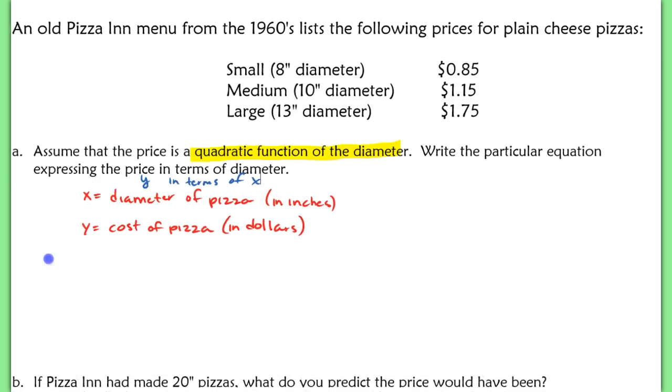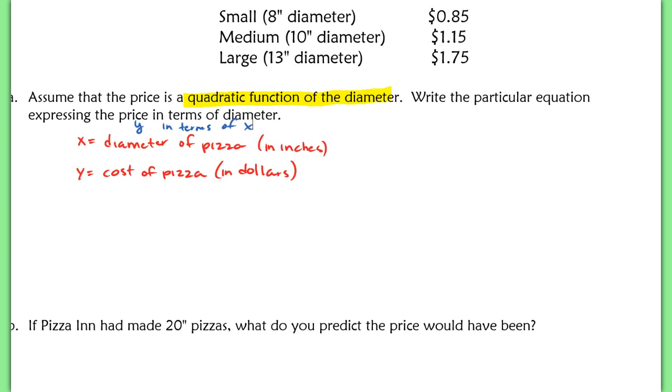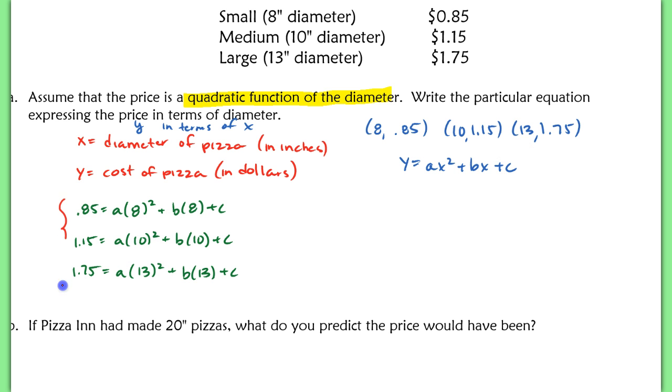This is just an application of taking three coordinate pairs. We have (8, 0.85), (10, 1.15), and (13, 1.75). These are three coordinate pairs, and we're going to write a quadratic model using y equals ax squared plus bx plus c. We have three distinct equations using each one of these coordinate pairs, so we can actually write this as a matrix.